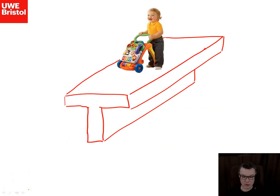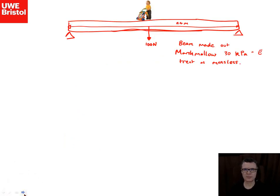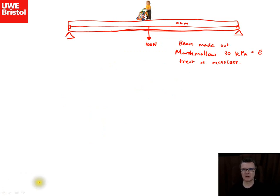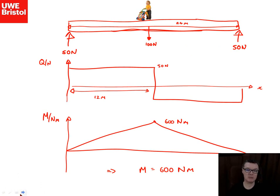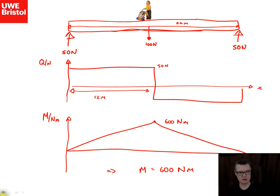Let's look at an example. Imagine an 18-month-old child walking across a beam made of marshmallow. The beam is 24 meters long and the child weighs about 100 Newtons. From the shear force diagram and bending moment diagram, the maximum bending moment works out to 600 Newton meters.